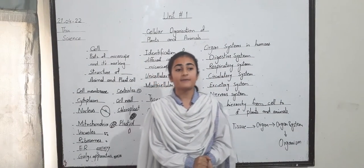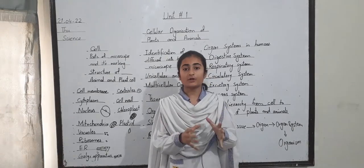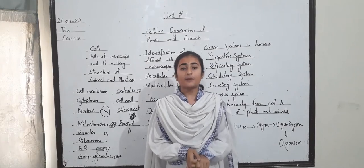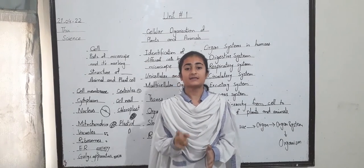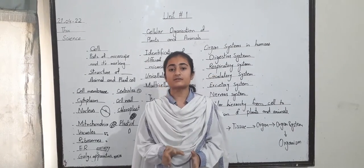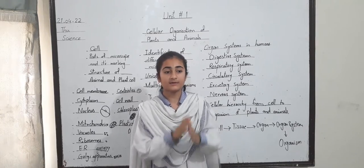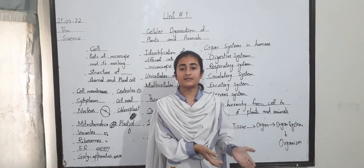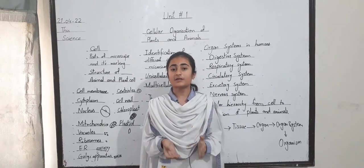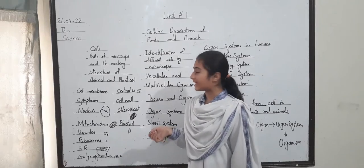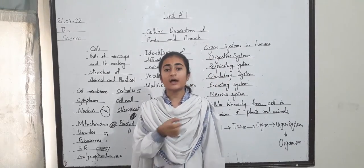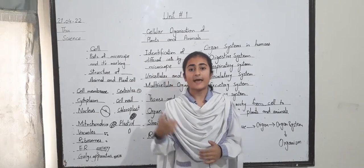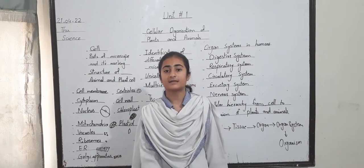Difference between animal and plant cells: Animal cells are small and irregular in shape because the cell wall is absent in animal cells. Plant cells have a cell wall which gives structure and a rectangular shape, so plant cells are big. Centrioles are absent in plant cells but present in animal cells. Mitochondria are present in both animal and plant cells. Cell wall is absent in animal cells and present in plant cells.